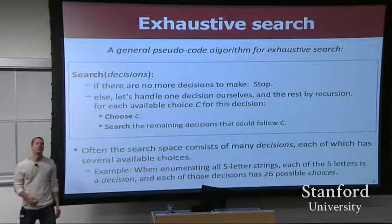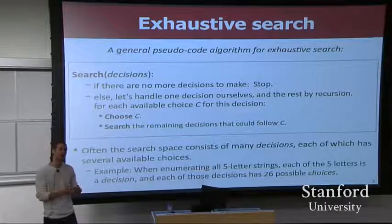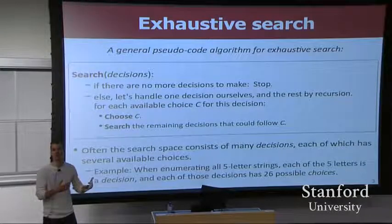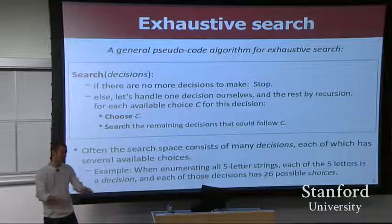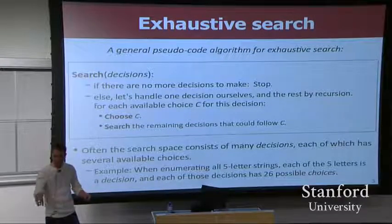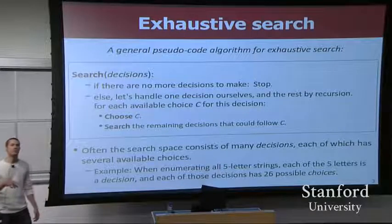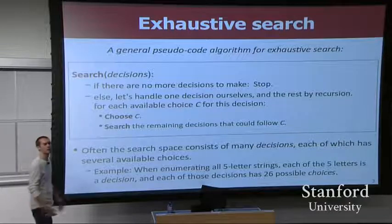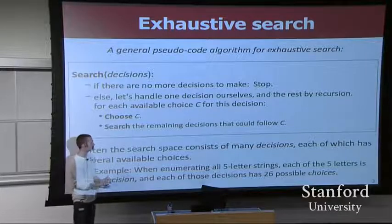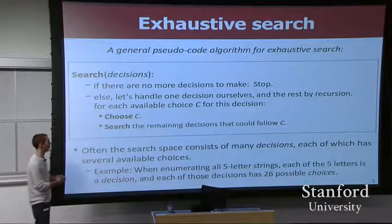If I'm playing checkers and I want to explore all possible moves to find the best one - let's say I have five checkers on the board. For each checker, I could consider all the different moves I could make. I'll try making a move with one checker, explore all the possible things that could happen after that, and see what I get. We call this the search space that your code is walking through.